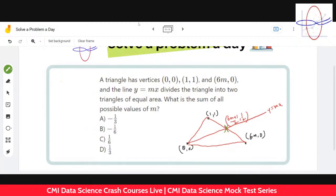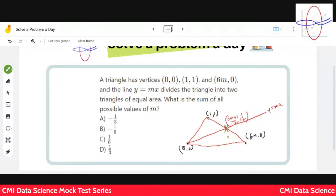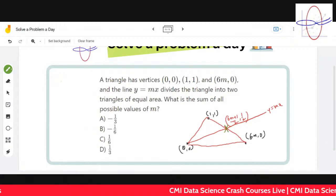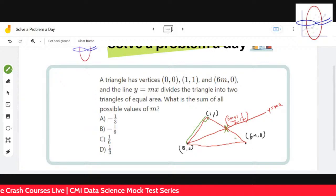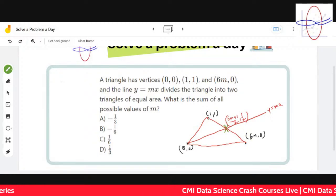If this is the midpoint and y = mx passes through this midpoint, it divides into two equal areas because the height is the same and the bases must be equal. Therefore this must equal this - that's the midpoint idea.